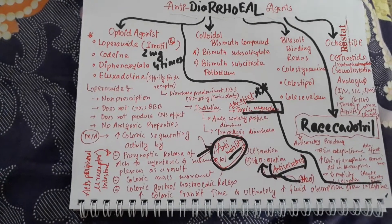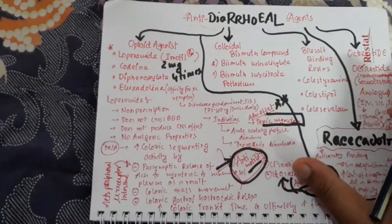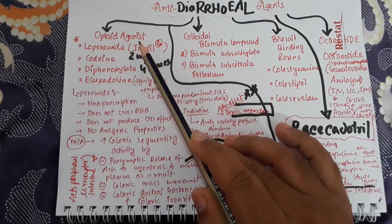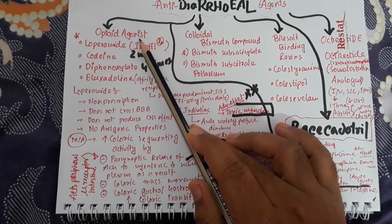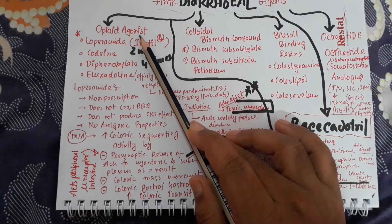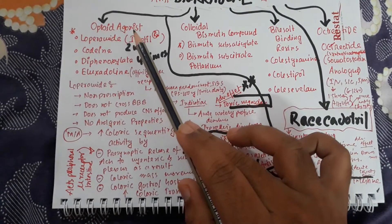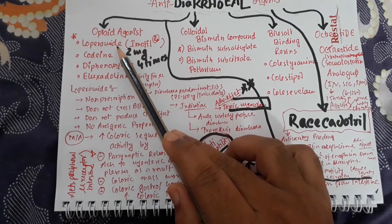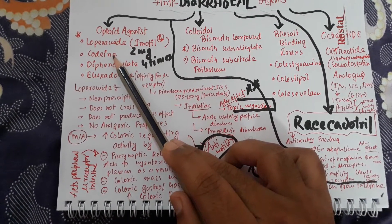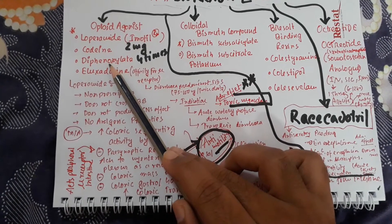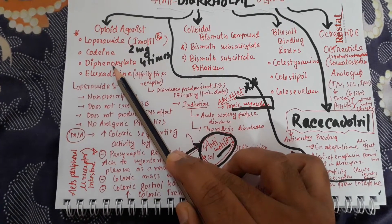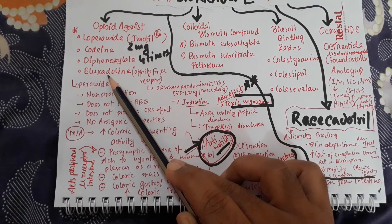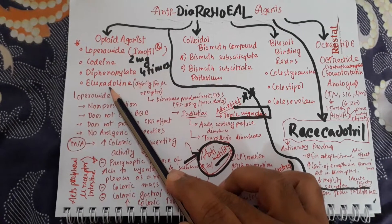Now we will discuss anti-diarrheal agents. The first class is opioid agonists, also called anti-secretory or anti-motility agents. In this class, there are several drugs: loperamide, which is used nowadays; codeine, which is now obsolete; diphenoxylate, which is also now totally obsolete; and eluxadoline, which has some role as an opioid agonist to control diarrhea.